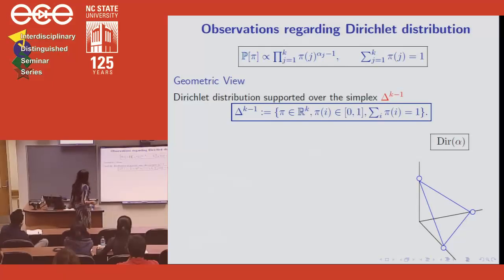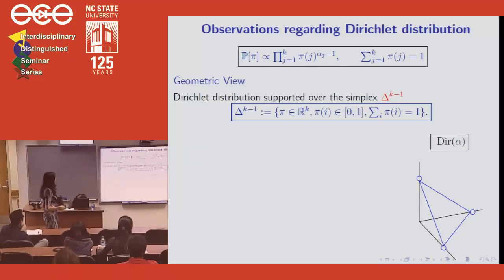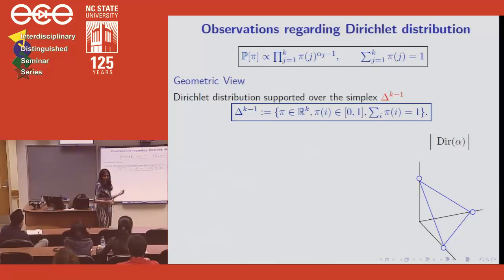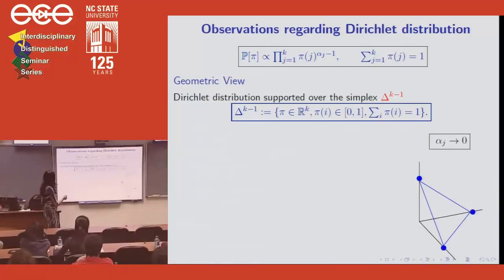At every node, you draw community memberships randomly and independently of other nodes. This φ_u is a k-dimensional vector — the different coordinates are essentially exponentiated with parameter α_j's, called concentration parameters. To visualize the Dirichlet distribution: the distribution has a constraint that these coordinates sum to one, since they represent fractional memberships, and draws are on a simplex. For different concentration parameters, the distribution looks different. If I send this concentration parameter to zero, the distribution concentrates on the vertices of the simplex — you're just obtaining basis vectors, which is just the earlier stochastic block model.